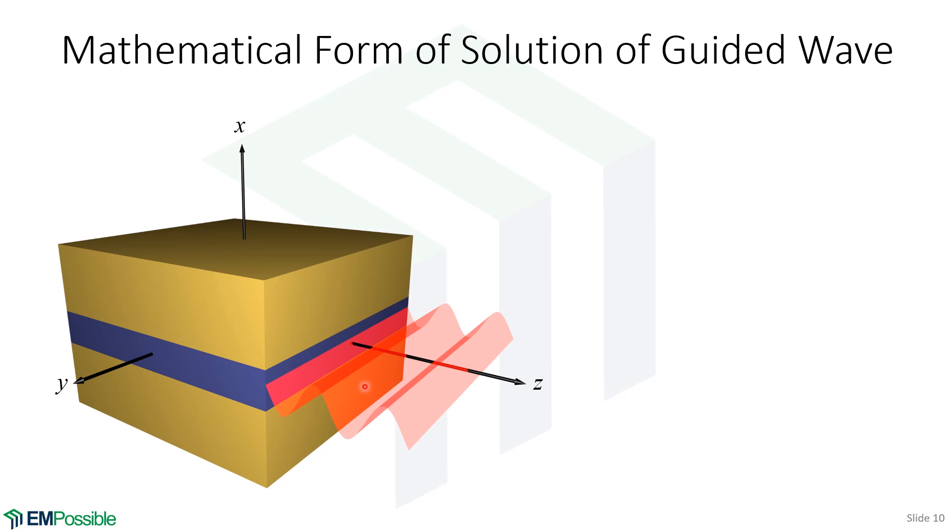We notice in the z direction, the slab waveguide does not change, and the form of our solution does not change in the z direction—it just accumulates phase. This suggests our solution has a specific mathematical form. Here it is: we have the overall electric field as a function of x, y, and z. It can change in all three directions, but due to the symmetry of our slab waveguide, the guided modes will be written as a product of two different terms—very interesting and useful mathematically.